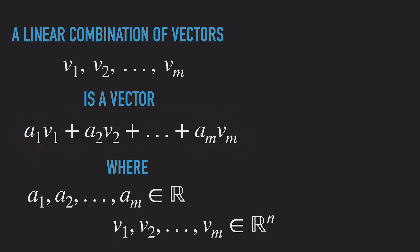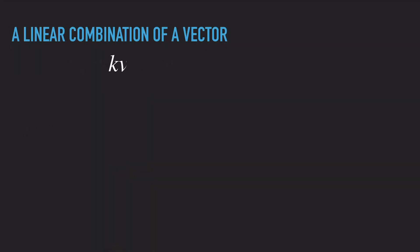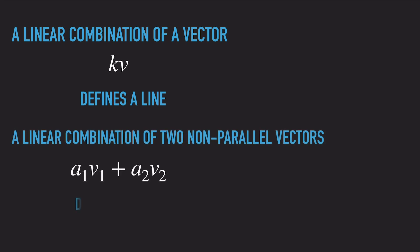The linear combination of one vector kv can define all the points along a line. The linear combinations of two non-parallel — also called independent — vectors are going to define a plane. So in order to define any plane, we need two vectors, and by combining them linearly we can reach any point on that plane.